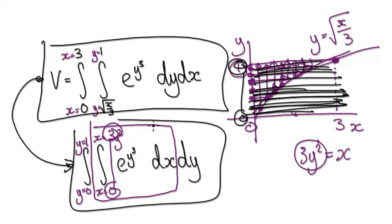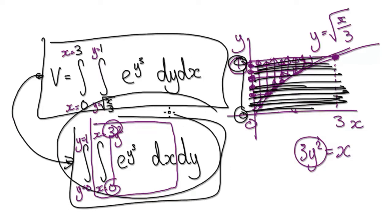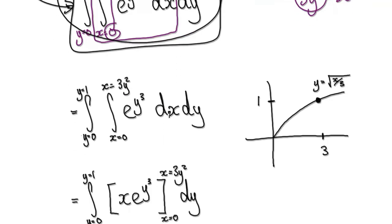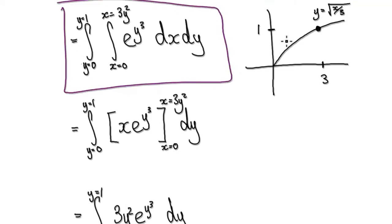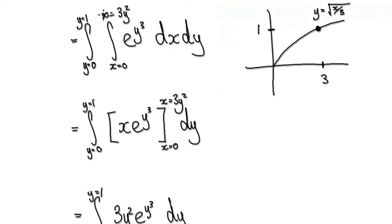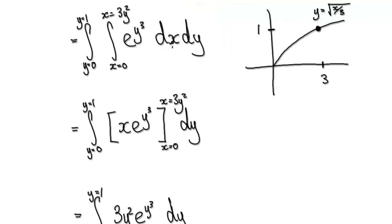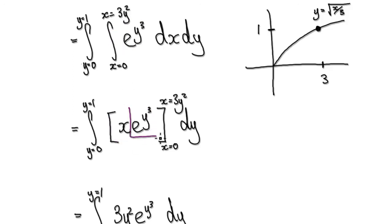To evaluate this, we translate it to the new form. Now it's just a matter of integrating with respect to x. The whole block is treated as a constant, so when you integrate you get this expression, with x as the variable. We're integrating from zero to 3y².